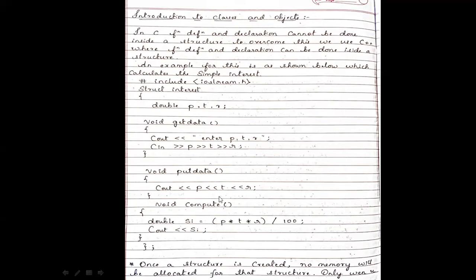To overcome this drawback, in C++ we can easily use function definitions and declarations inside a structure. The major difference between C and C++ is that function definition and declaration cannot be done inside a structure in C, whereas in C++ they can. Now we are writing a C++ program using structures to calculate simple interest.